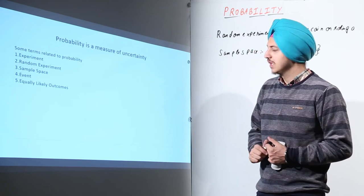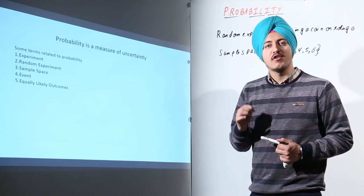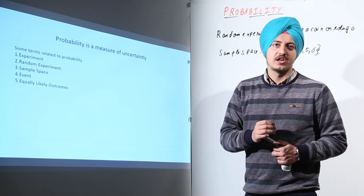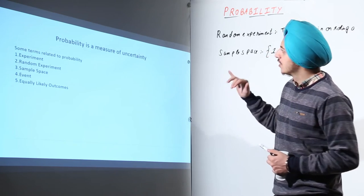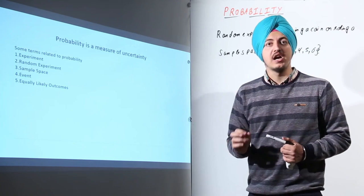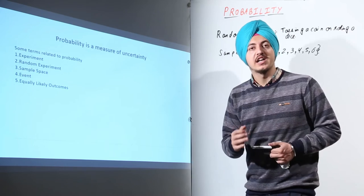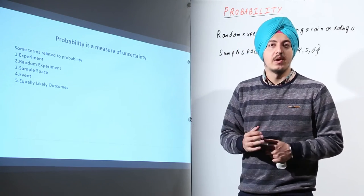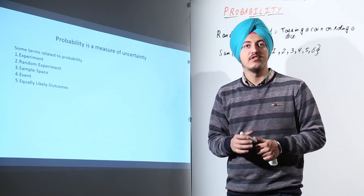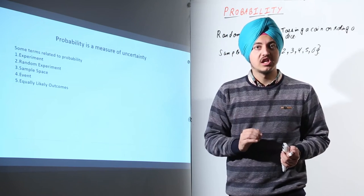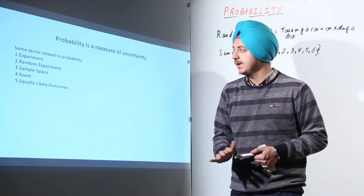Now what is an event? An event is a subset of the sample space related to the random experiment. In rolling a dice, an event can be the occurrence of 5, the occurrence of even numbers, the occurrence of 2, or the occurrence of a number less than or equal to 3. These are all events.